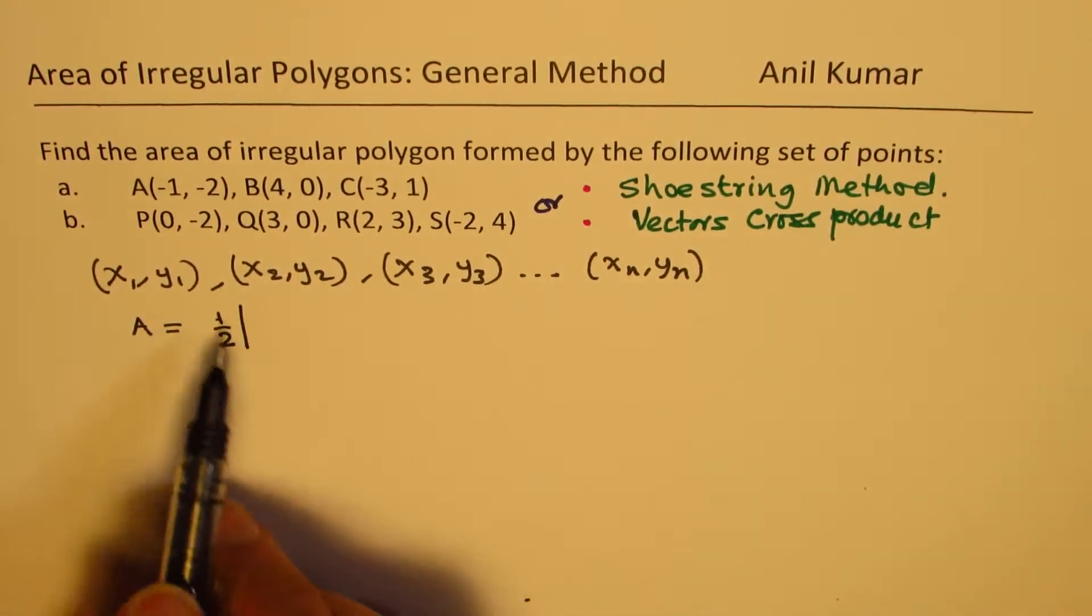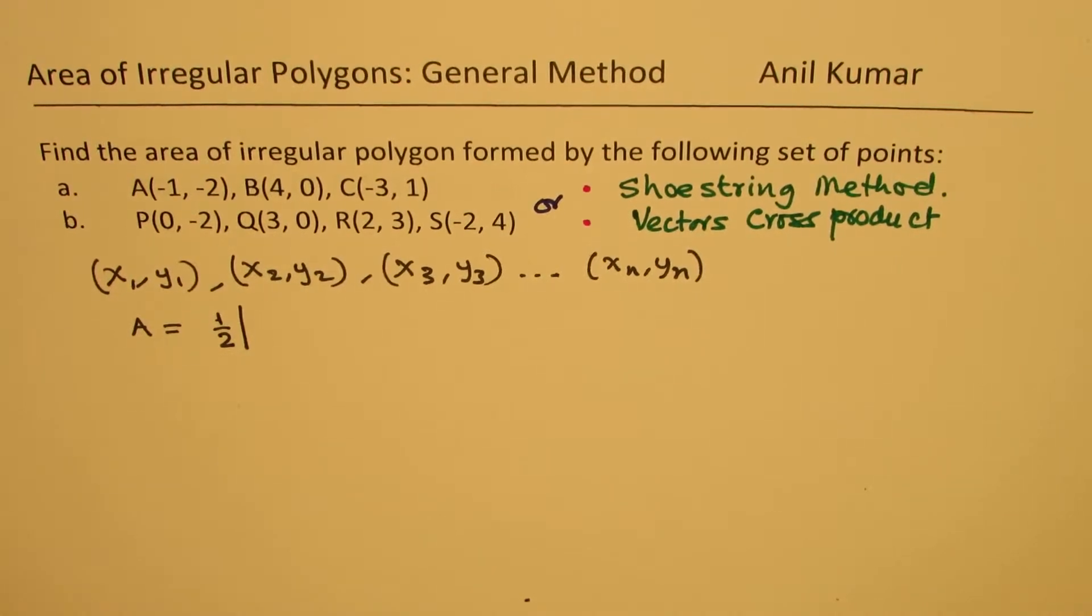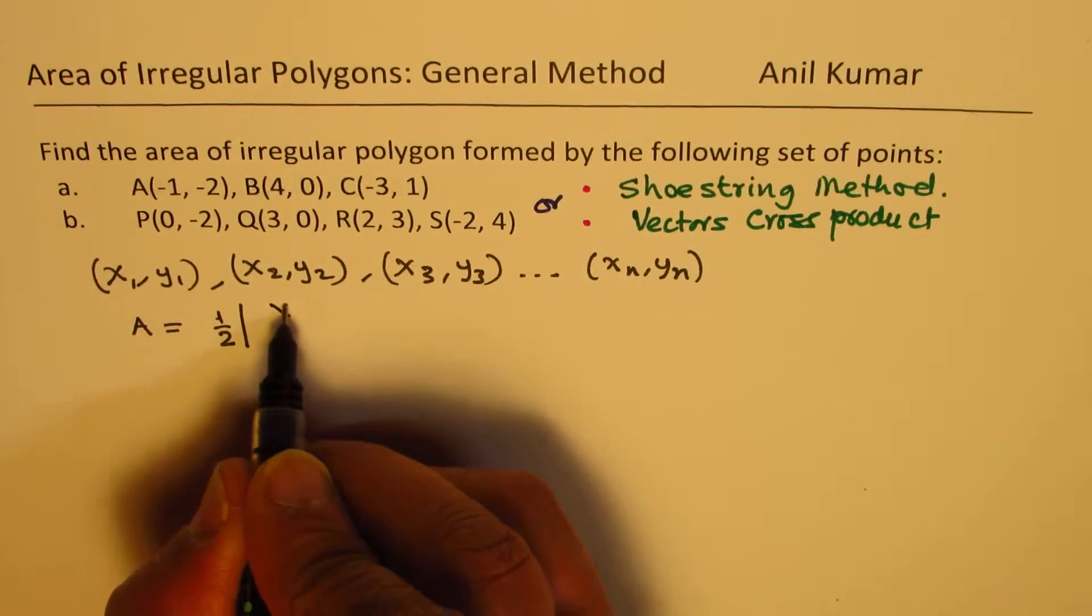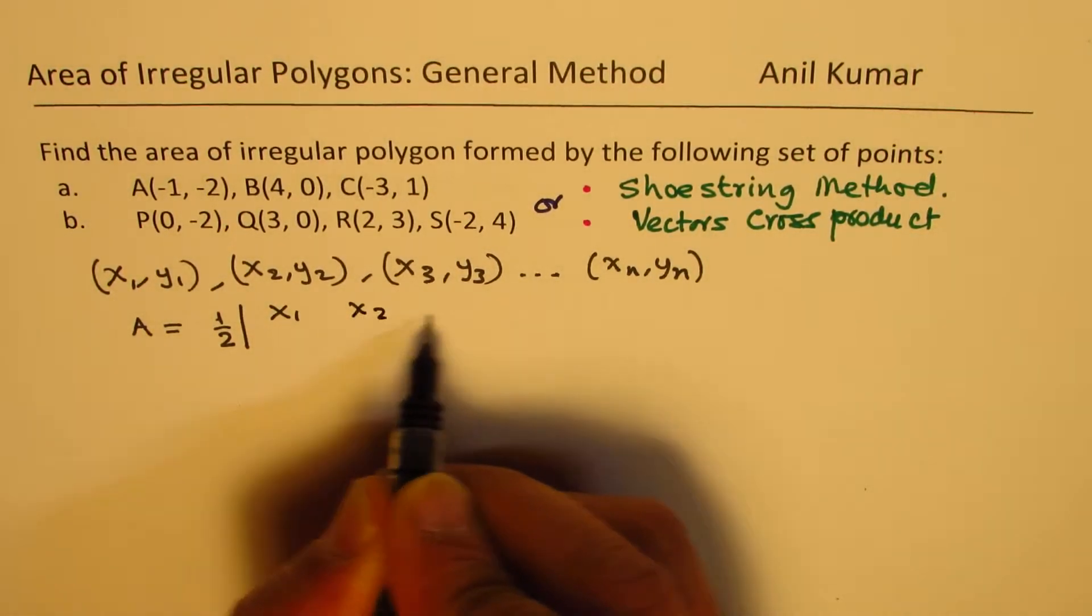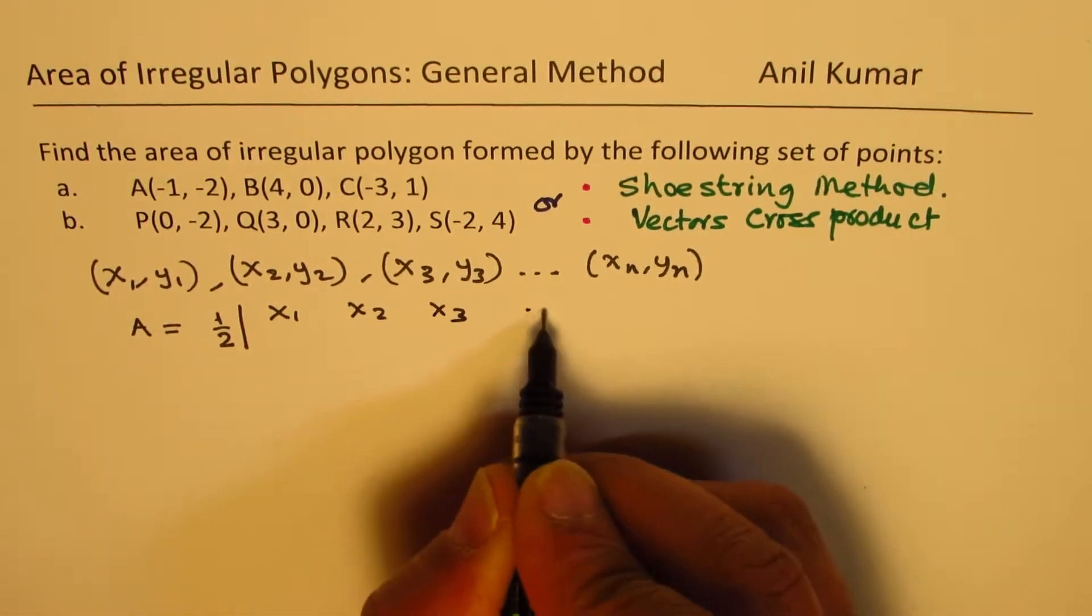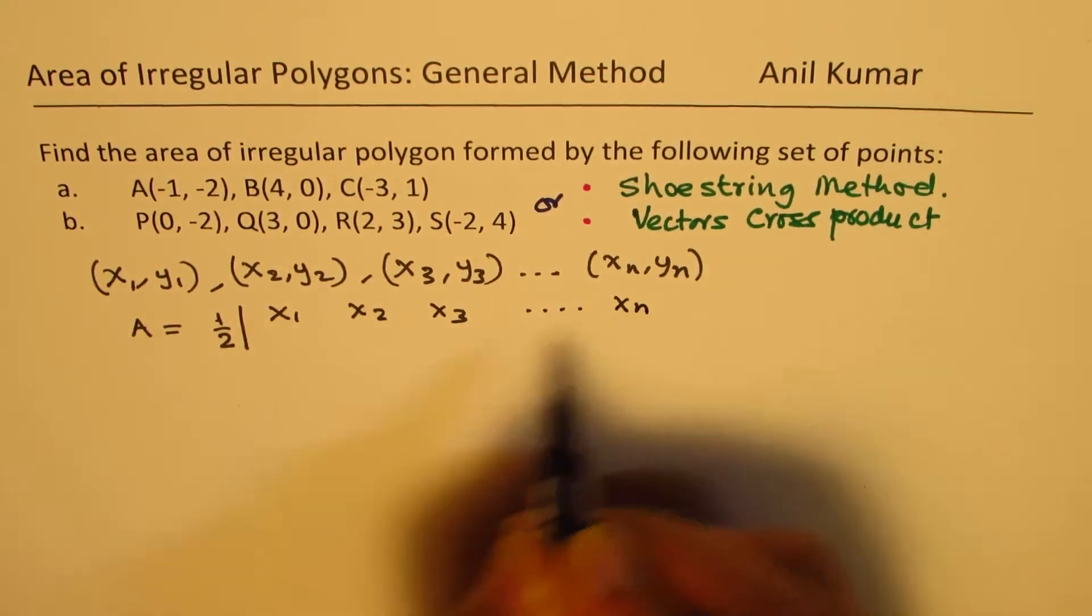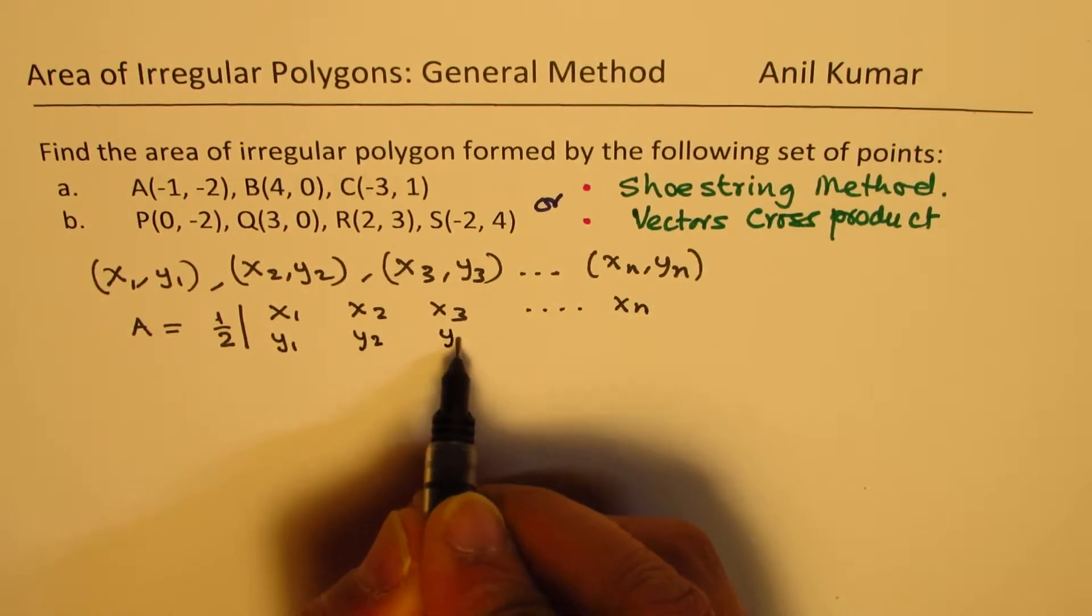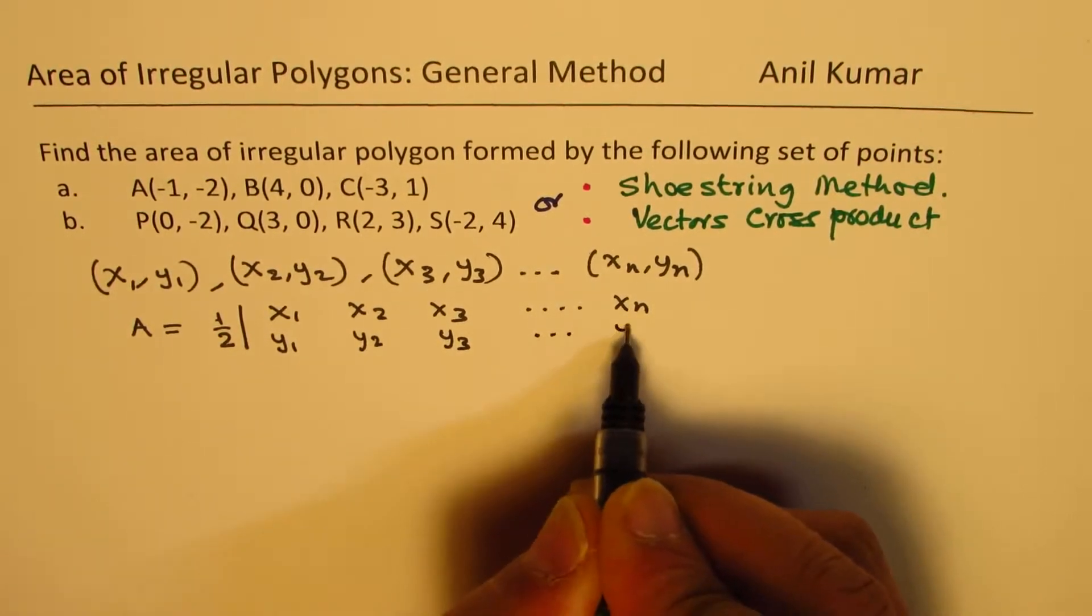Area is always a positive value. So, we write absolute value of, and the trick here is, let me write these coordinate points, x1, x2, x3, so on, till xn. And then, we'll also write y1, y2, y3, and so on, till yn.